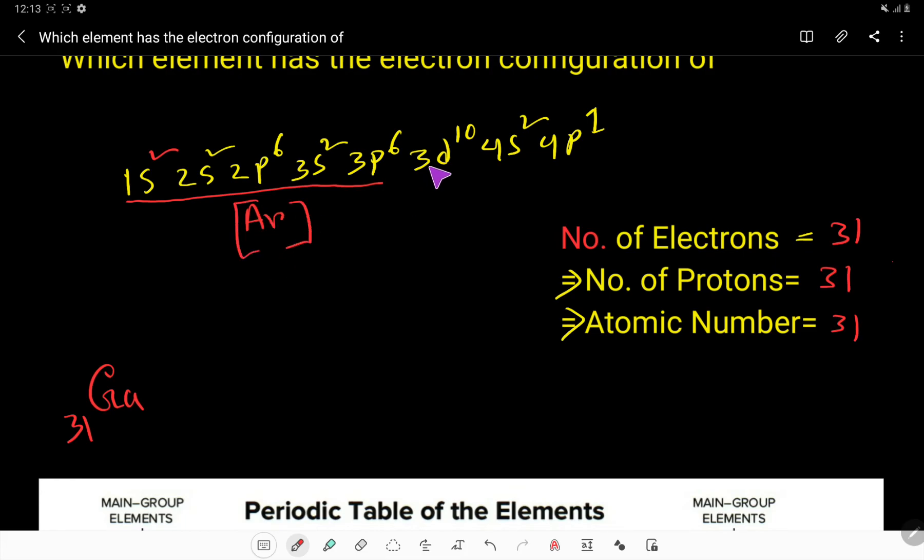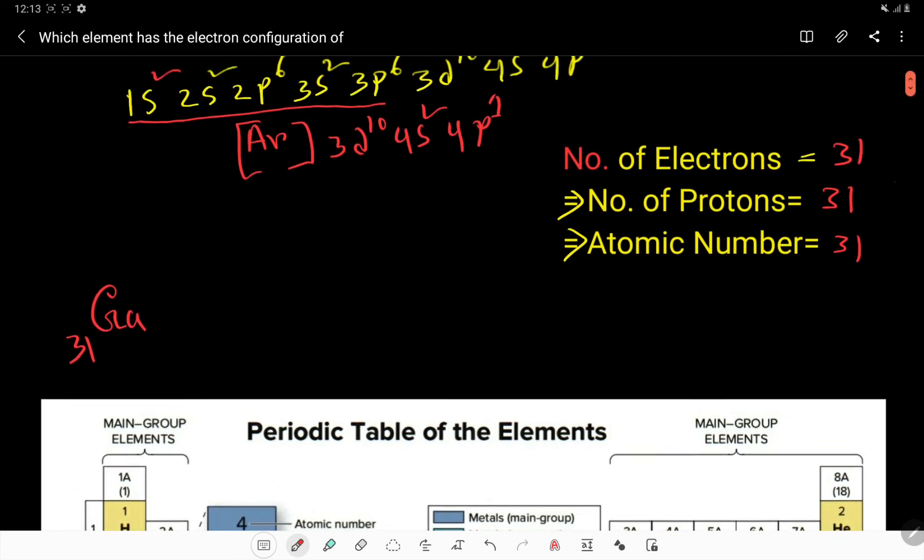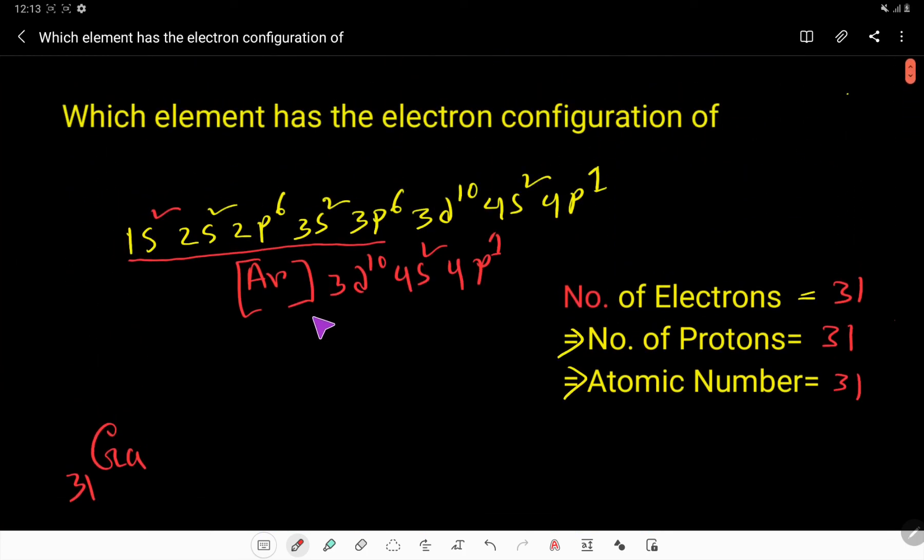Argon, then 3d¹⁰ 4s² 4p¹. Look here, we have 31 electrons and the nearest noble gas is argon. Look here, argon is 18 but krypton is 36, so we have to take argon for writing abbreviated electron configuration.